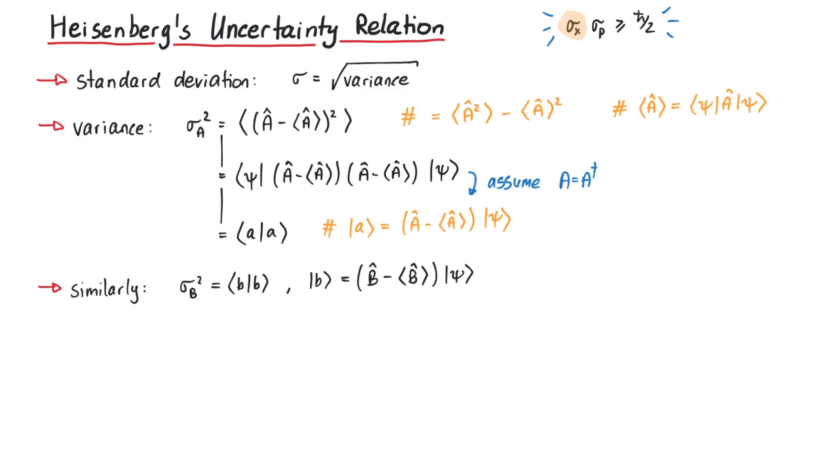If we now consider the product of the variances of those two operators, we can make use of the Cauchy-Schwartz inequality. Since AA times BB is greater than or equal to the squared magnitude of AB, the product of variances is in the same way greater than or equal to AB squared. As you can see, this is where the inequality in Heisenberg's uncertainty relation comes from.